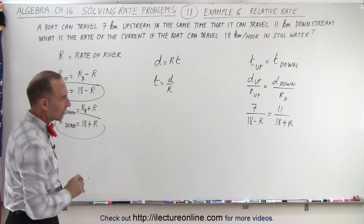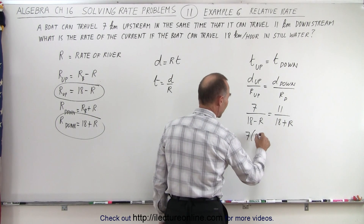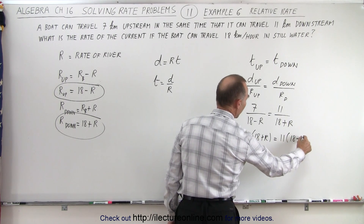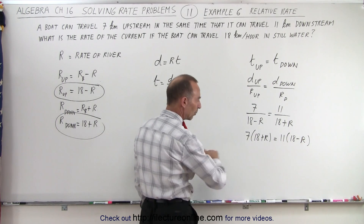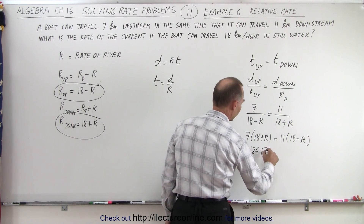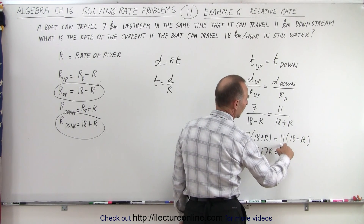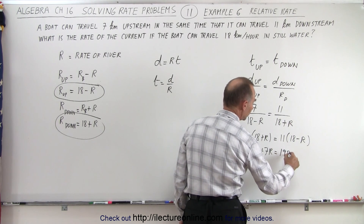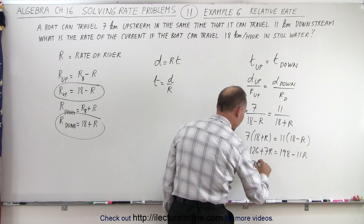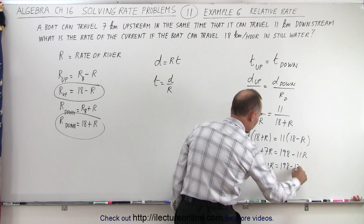Now we have a cleaner equation. To solve it, we're going to cross multiply: 7 times (18 plus r) equals 11 times (18 minus r). Multiplying through gives us 126 plus 7r equals 198 minus 11r.